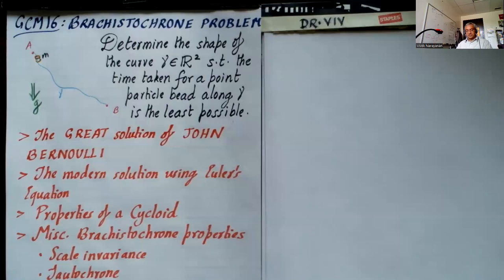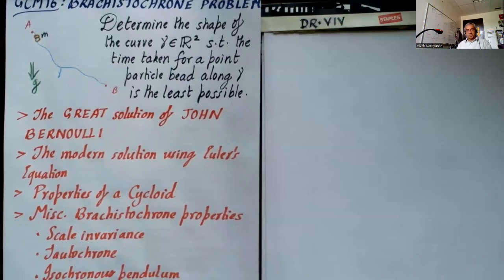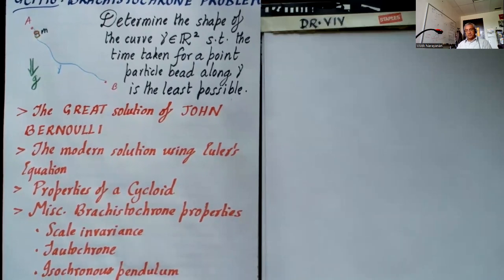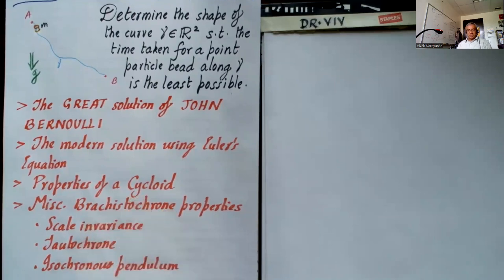I'll be looking at several solutions. The great solution of John Bernoulli is what I'll focus on initially, and then we'll do the modern solution using variational calculus, i.e. Euler's equation. The answer will turn out to be a portion of the cycloid — so I've given away the answer — and then we'll talk about some miscellaneous properties of this Brachistochrone curve, such as scale invariance and its property called the tautochrone. I'll also describe the isochronous pendulum.